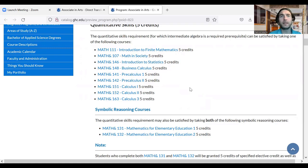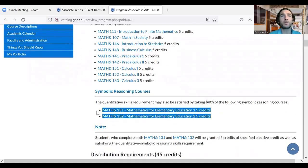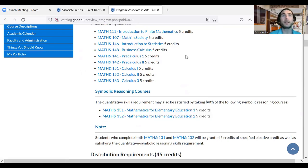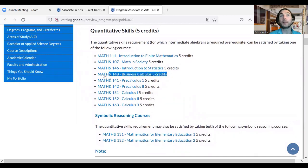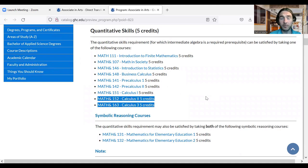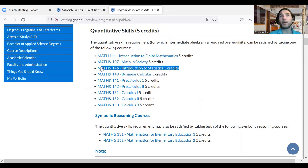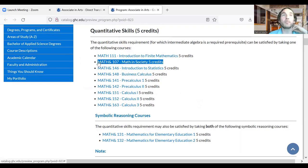If you're interested in elementary teaching, please take Math 131 and Math 132, Mathematics for Elementary Education. If you're interested in business, it would be good to aim for Business Calculus, Math 148. If you're interested in STEM—science, technology, engineering, and math—you'll probably need Calculus 2 or 3. If you're interested in nursing, social science, or perhaps psychology, you'll probably need Math 146 Statistics. And then for Bachelor of Arts degrees in Arts, Humanities, Criminal Justice, and more, you can take Math 107, Math in Society.